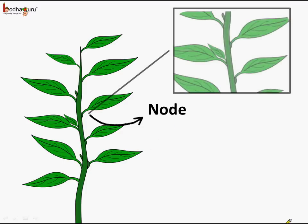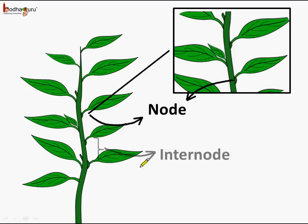Here we have the node, and here too there is a node. And this is the distance between two nodes — it is called internode.